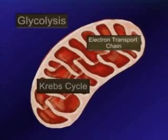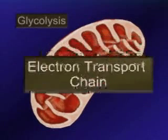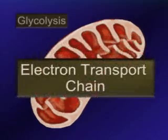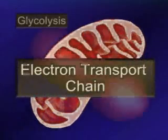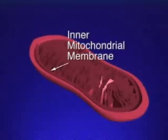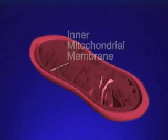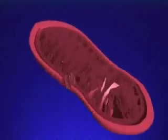The last stage of aerobic respiration is the electron transport chain. The electron carriers are embedded in sequence along the inner mitochondrial membrane. This membrane is folded, providing space for many sets of these carriers.